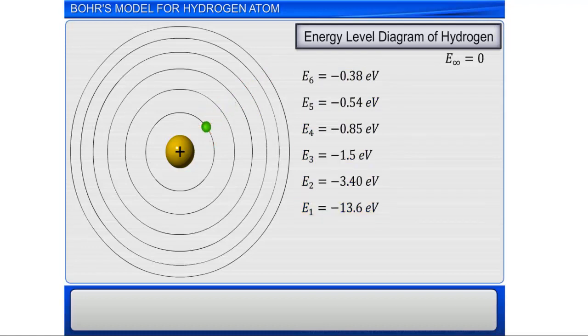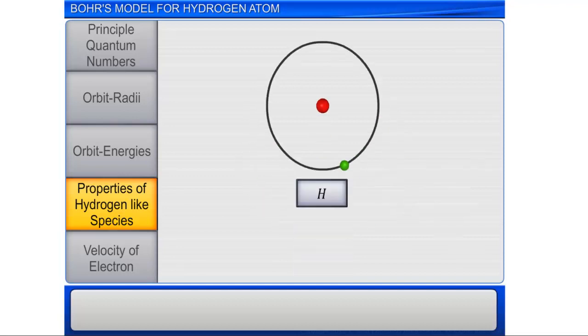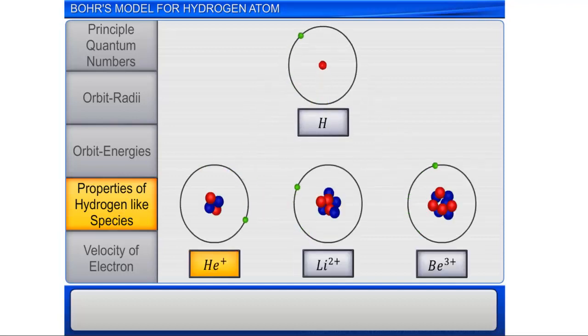Bohr's theory also applies to other ions, which are isoelectronic with hydrogen, such as helium plus, lithium 2 plus, and beryllium 3 plus ions, that contain one electron each.